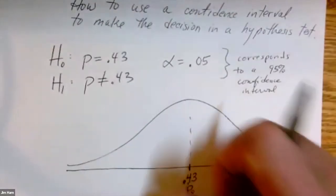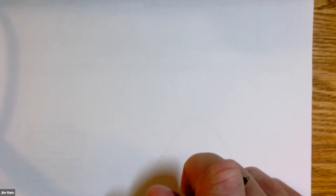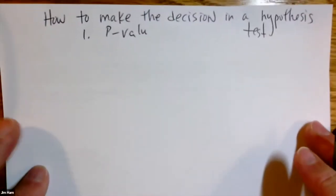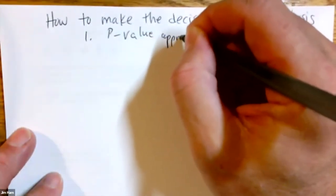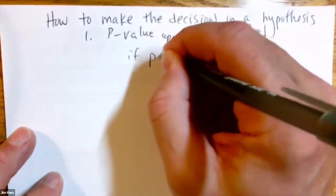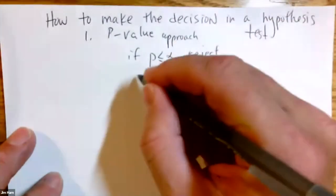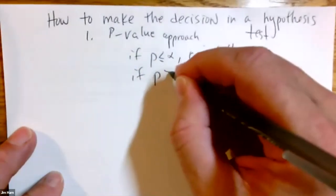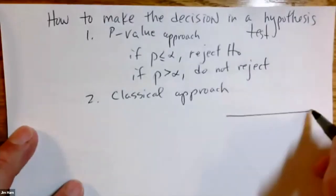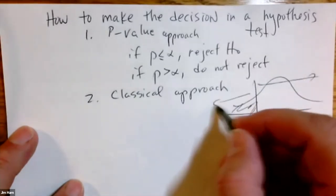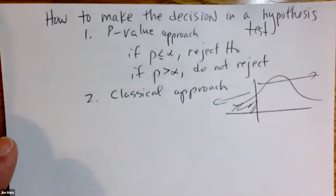There's one other thing I want to share about how to use the confidence interval to make the decision. We have two methods so far: the p-value approach, where if p is less than or equal to alpha, we reject, and if p is greater than alpha, we do not reject. The second way is the classical approach, where you draw the sampling distribution, shade the region, and identify the reject and do-not-reject regions.